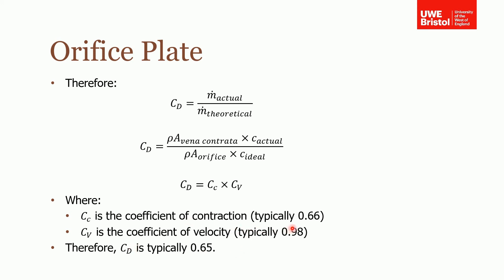However we need to include this additional coefficient which is the coefficient of contraction, which is due to these changes in area. So it's the vena contracta area divided by the orifice area and that's typically around 0.66 for an orifice plate.